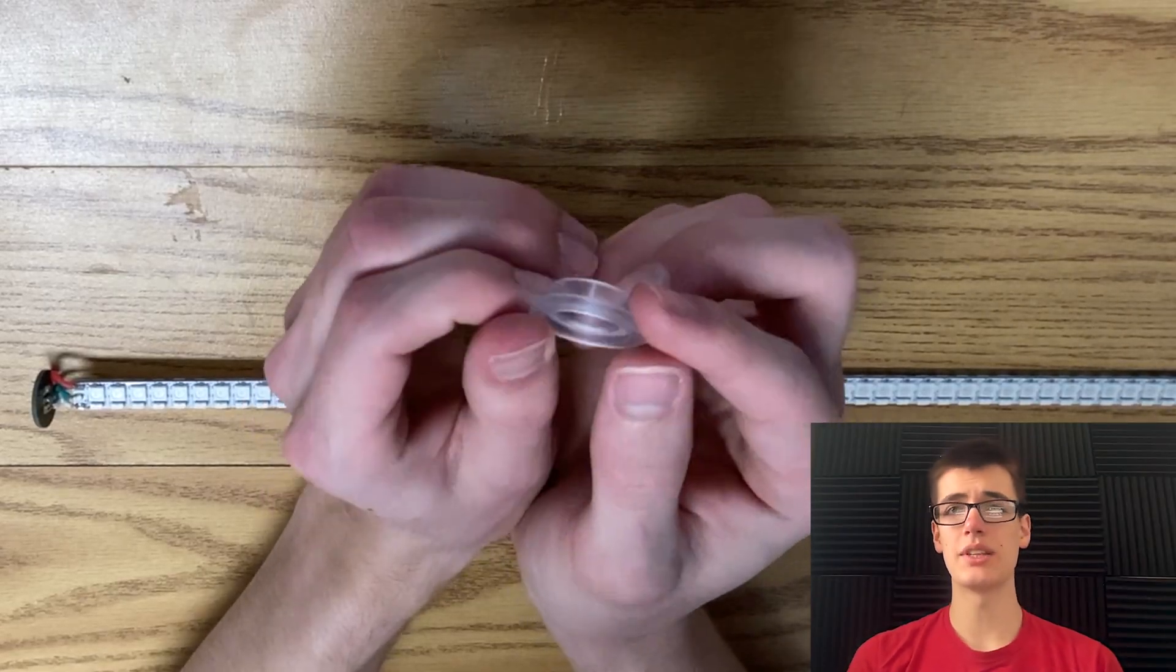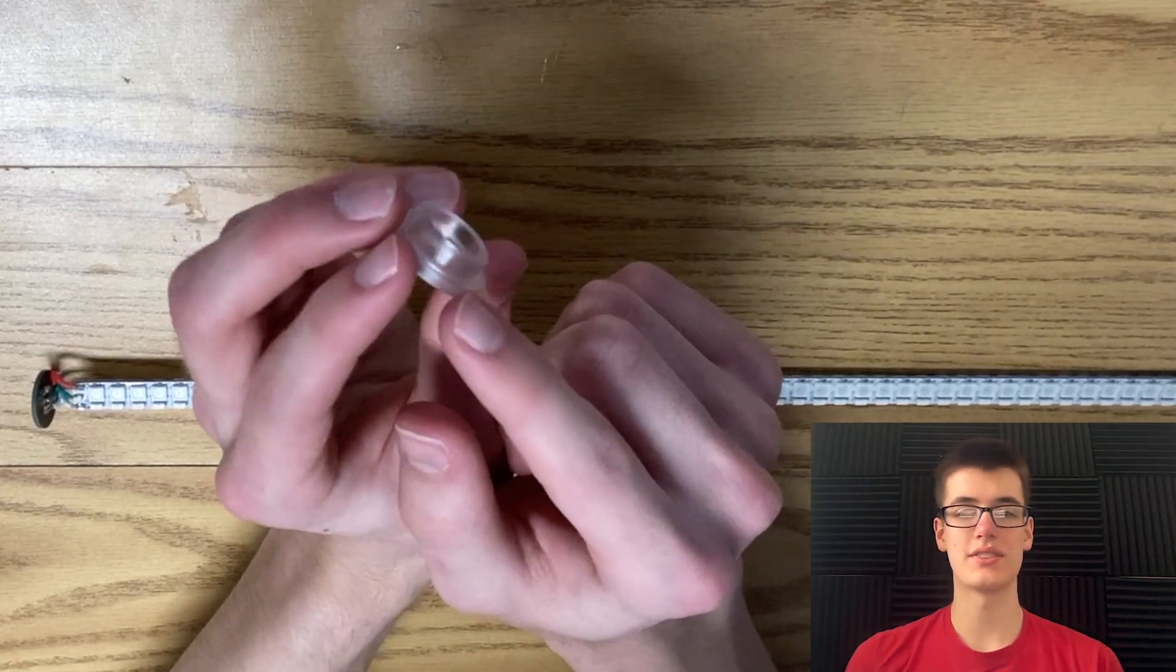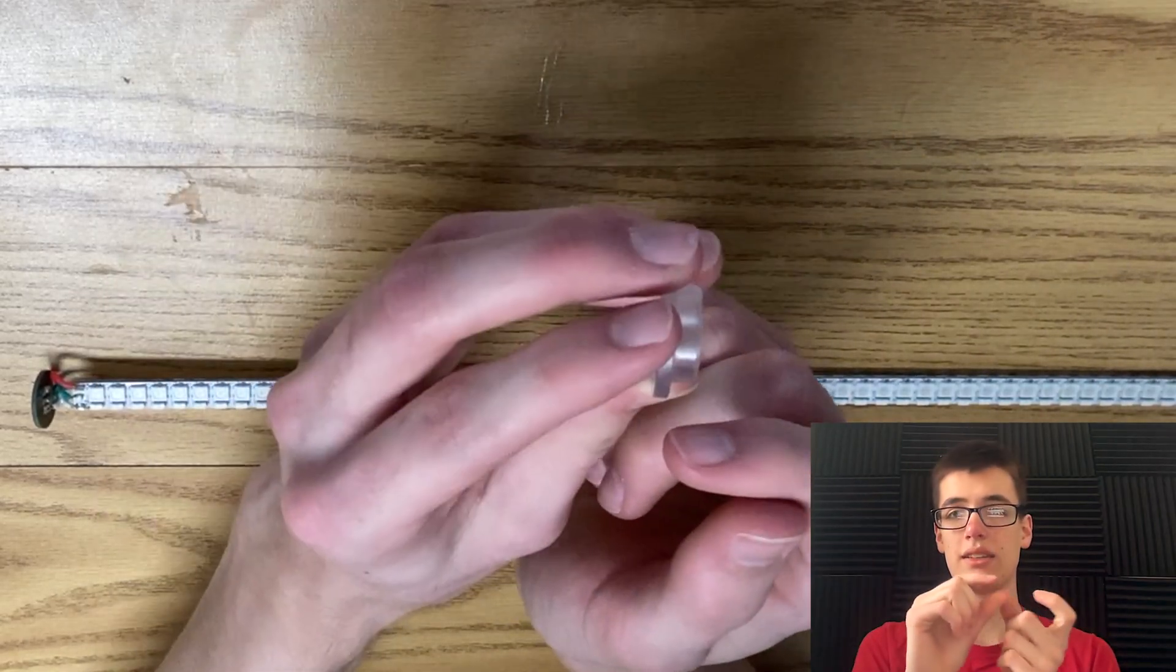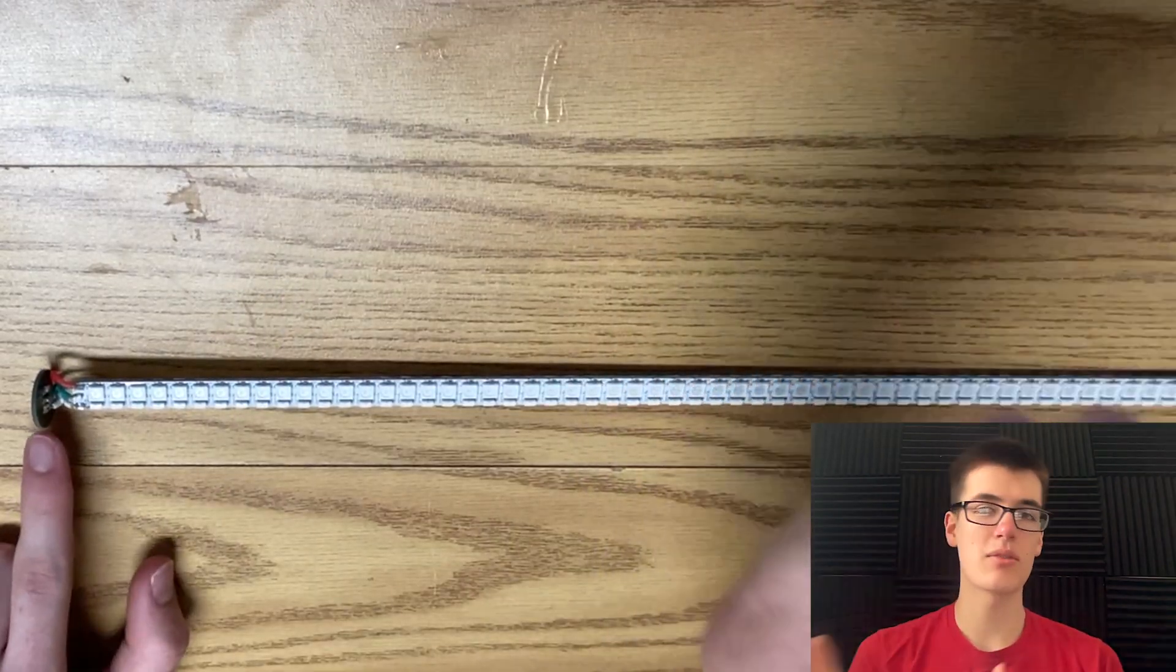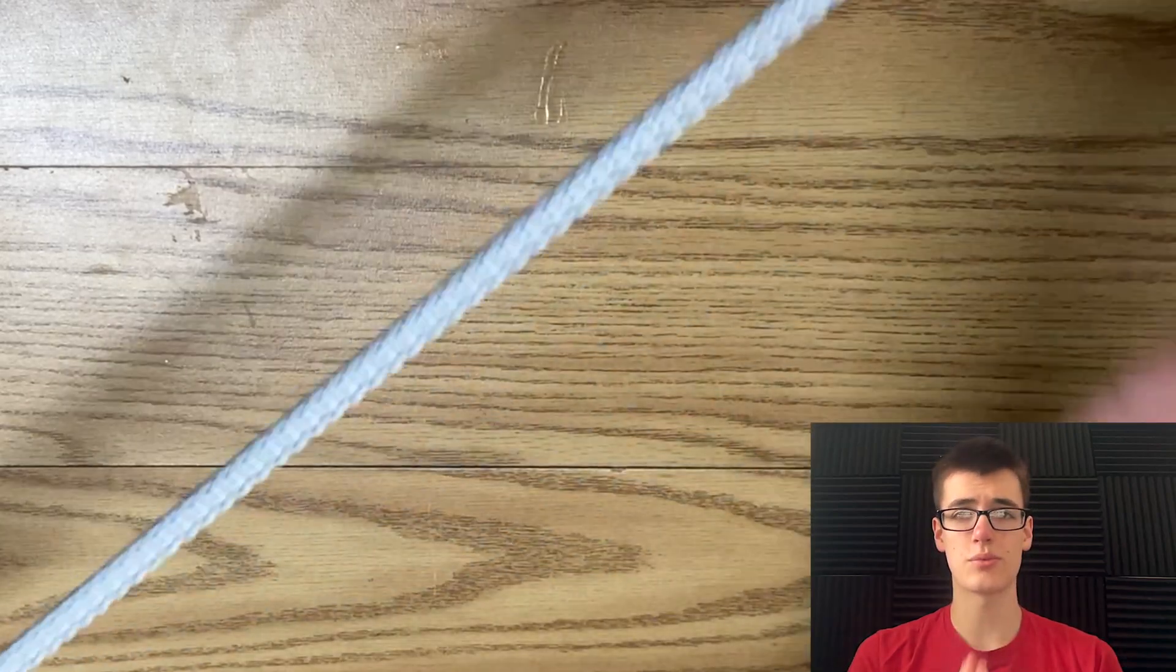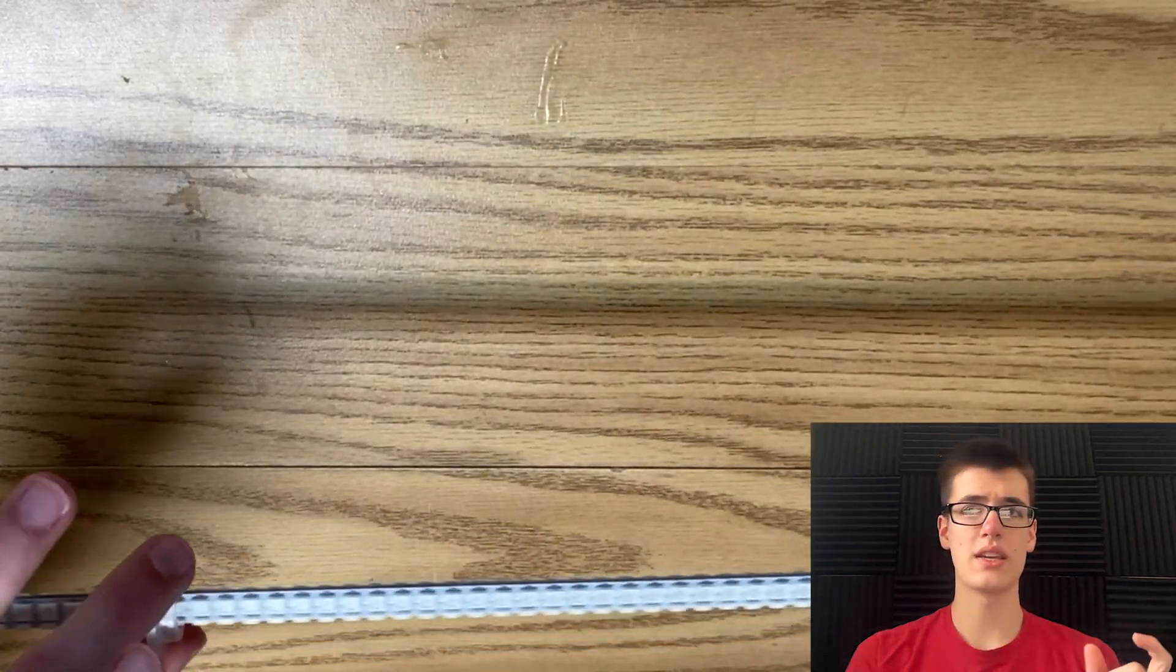Now to hold this little PCB in place at the end of our blade, we have this little adapter which fits snugly around the PCB and also fits snugly into the blade itself. But fitting snugly is not enough for our blade to hold together under the battering that it's going to be taking. So we need to add some super glue as well to make sure these connections stay together. The first thing we want to do is slide our adapter all the way down the LED strips and get it right by the PCB.